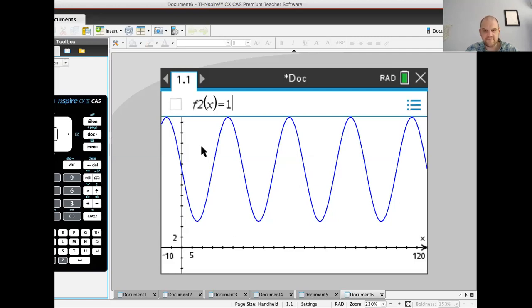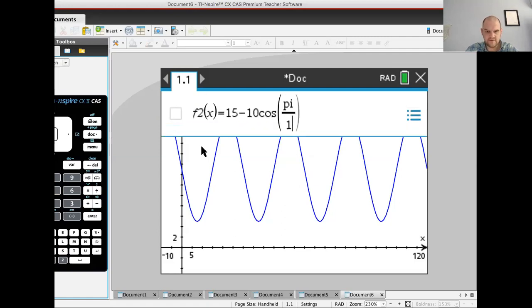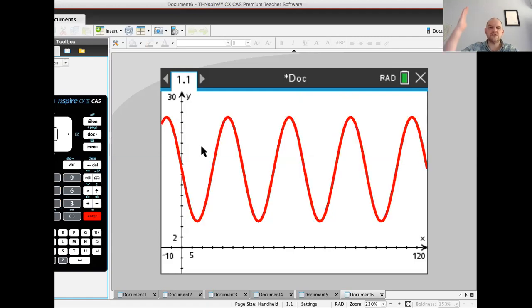So now 15 minus 10 cosine of π over 15, x minus 975 over 2, and enter. Yes. Very satisfying. So we got it right. So I got it right because I just kind of played around with numbers.